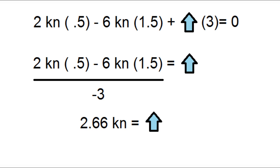We have two kilonewtons times 0.5 meters, and this is going counterclockwise, so it's positive. Then we have minus six kilonewtons times 1.5 meters, and this is clockwise, so it's negative. Then we have three meters times the force at the blue circle, and this is going counterclockwise, so it's positive.